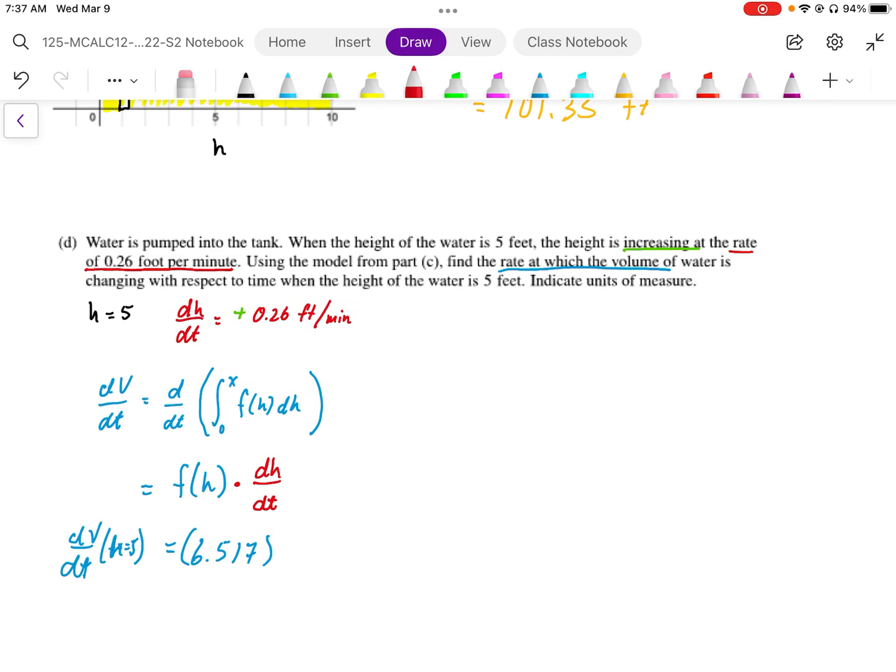And we're going to times that by the dH by dt, which was given at 5 feet. The dH by dt is 0.26 feet per minute.